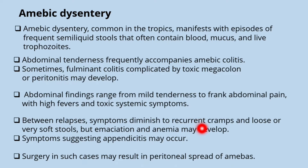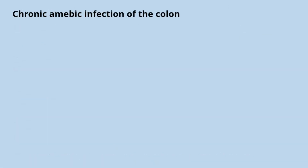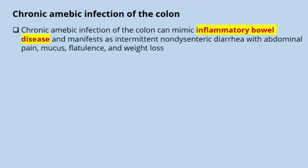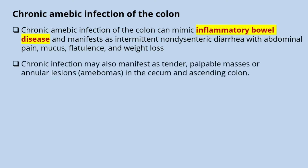Symptoms suggesting appendicitis may also occur; surgery in such cases may result in peritoneal spread of amoebas. The second condition is chronic amoebic infection of the colon, which can mimic inflammatory bowel disease and manifest as intermittent non-dysenteric diarrhea with abdominal pain, mucus, flatulence, and weight loss. Chronic infection may also manifest as tender palpable masses or annular lesions called amoebomas in the cecum and ascending colon.